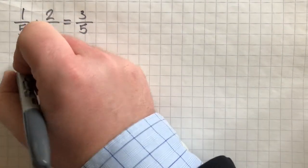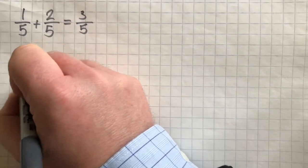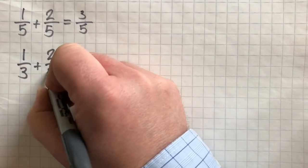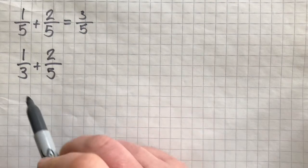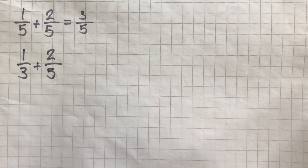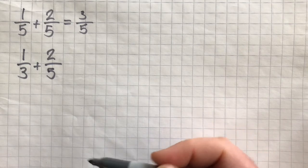Now, it gets a little bit more complicated when we have different denominators. So, in this question, you'll notice we have 1 third plus 2 fifths. We need to change thirds and fifths into the same denominator.